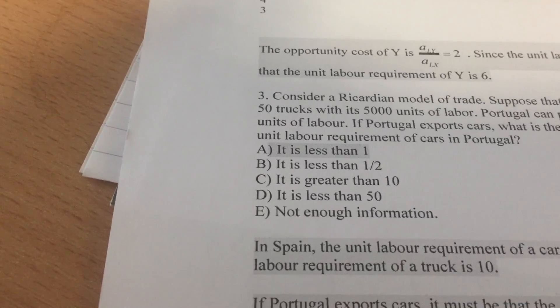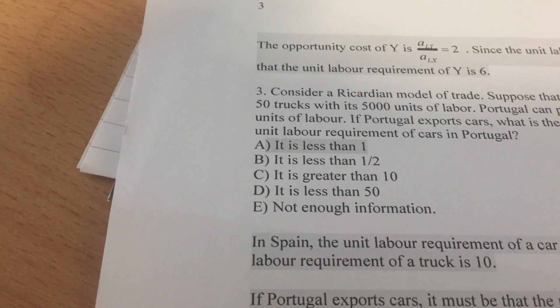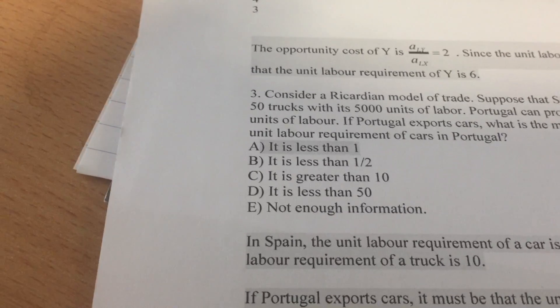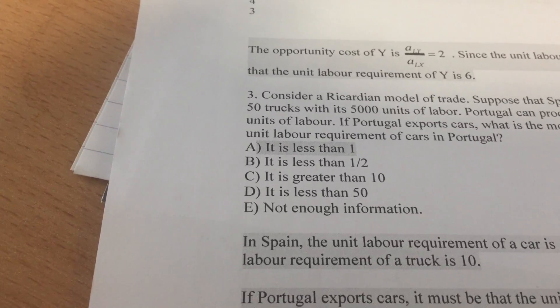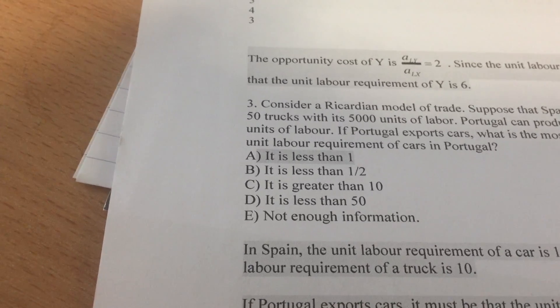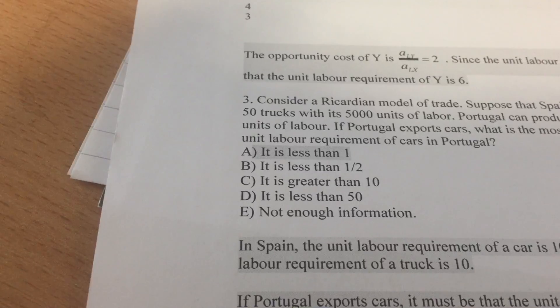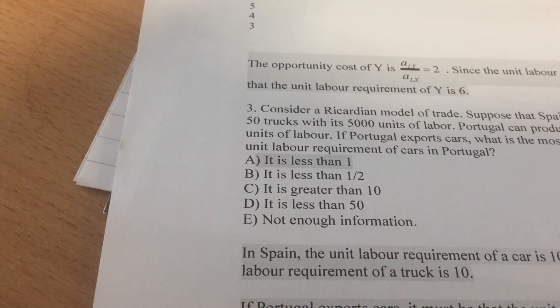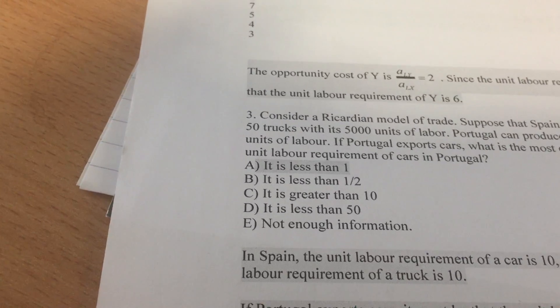So what were the other options here? That it's less than one-half? We don't know if it's less than one-half. We just know if it's less than one. It's greater than 10? No, it's got to be less than one. It is less than 50. That's true, but we can actually be more precise. It's less than 10. Not enough information. Nope, that one didn't work.